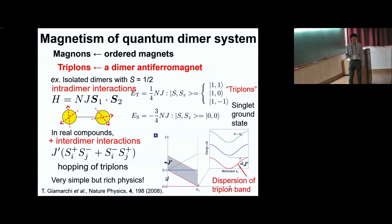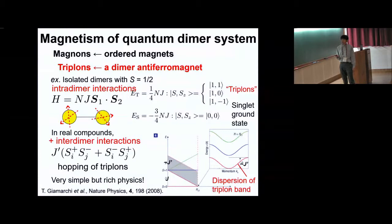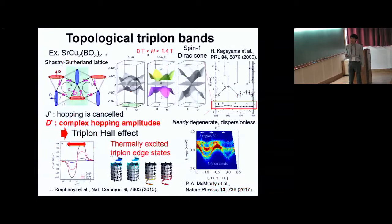In real compounds, in addition to the intradimer interaction J, interdimer interactions J' are also present. They induce hopping of triplons, leading to a dispersion of the triplon bands, as we see in inelastic neutron scattering experiments. As shown here, the dimer antiferromagnet is a very simple model, but rich physics are present.